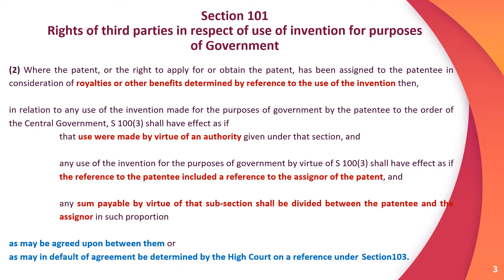Section 101 Subsection 2: Where the patent or the right to apply for or obtain the patent has been assigned to the patentee in consideration of royalty or any benefit determined by reference to the patent — meaning the patentee receives royalty or benefit from use of the invention and there is an assignment regarding that — then in relation to use of that invention made for government purposes by the patentee to the order of the central government, Section 100 Subsection 3 shall have effect.